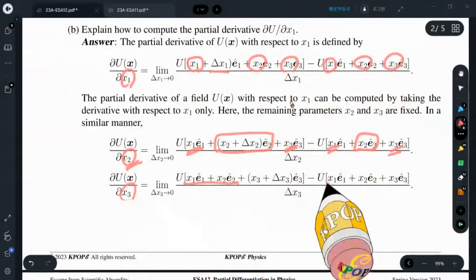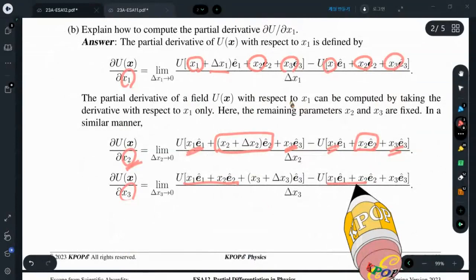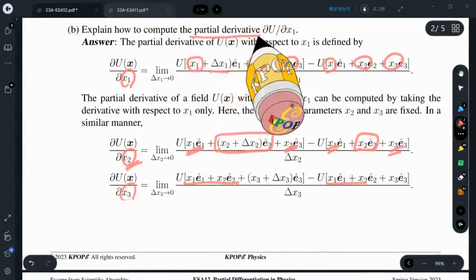In this case, x1 and x2 are invariant. This is the partial derivative.